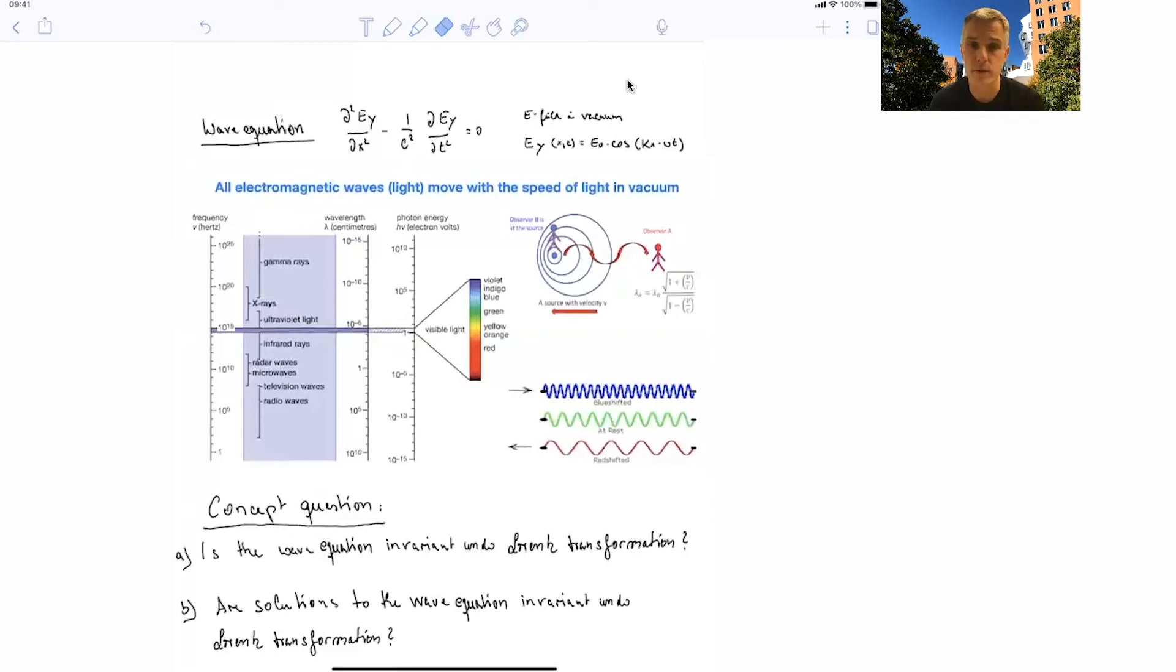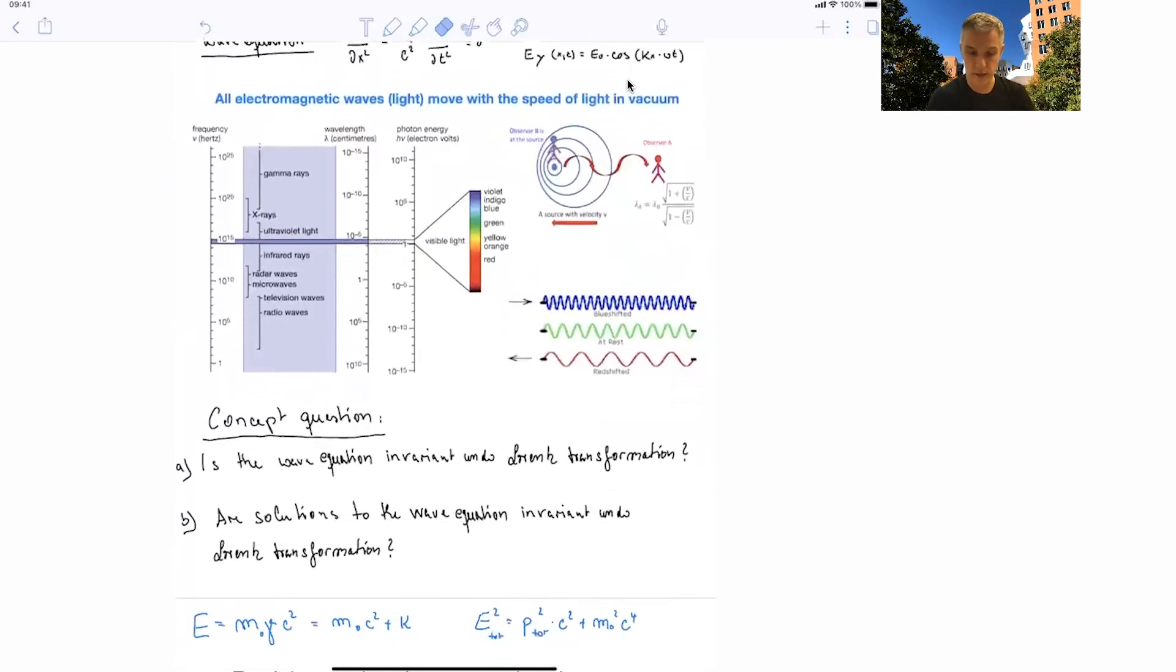So here there's two concept questions. The first one is, is the wave equation, which you can see there as an example, invariant under Lorentz transformation? And the second question is, how about the solutions? Are the solutions to the wave equation invariant under Lorentz transformation? So have you worked this out again?